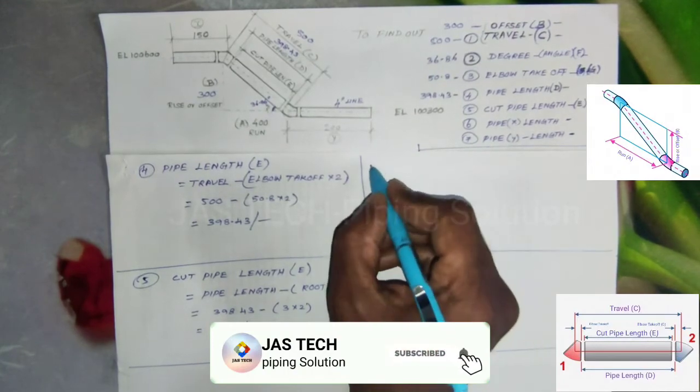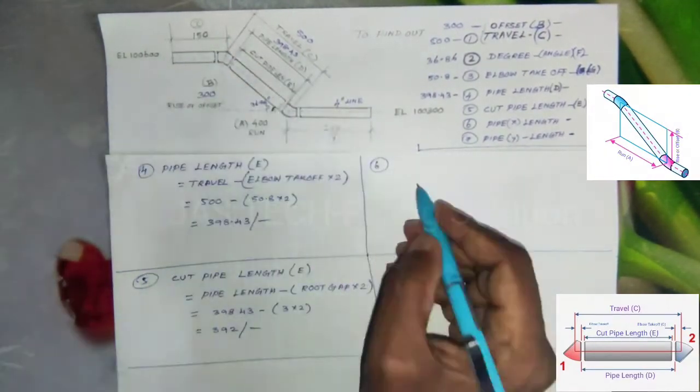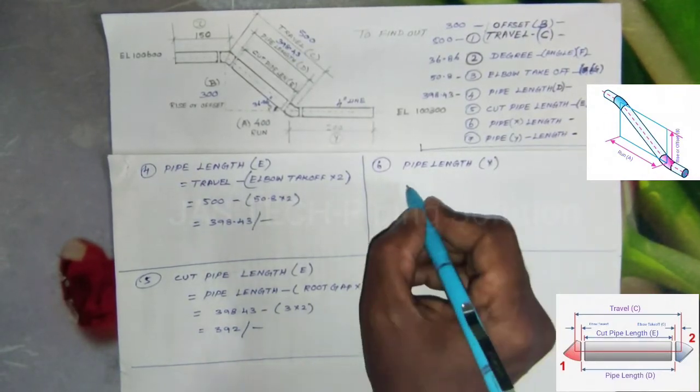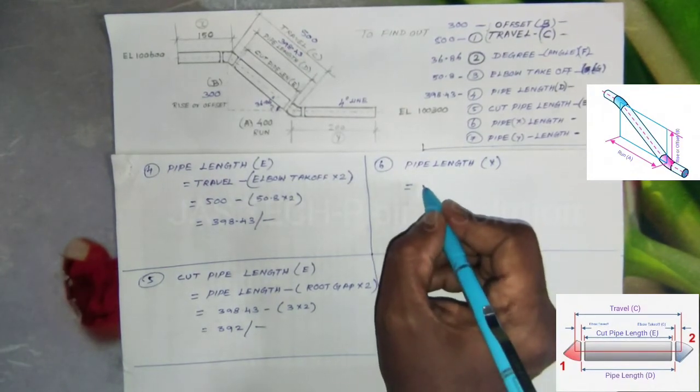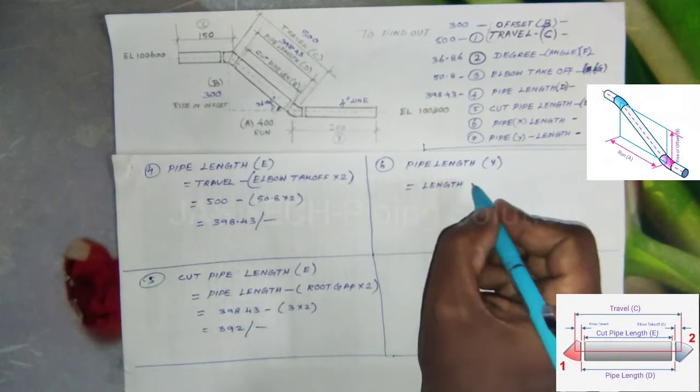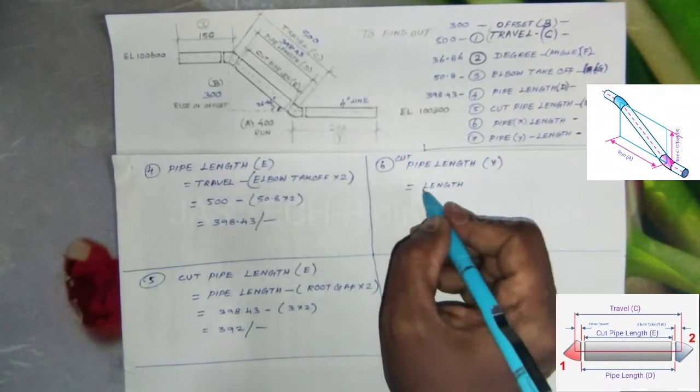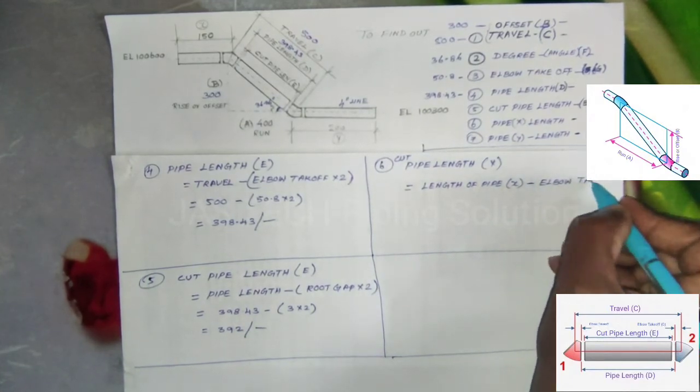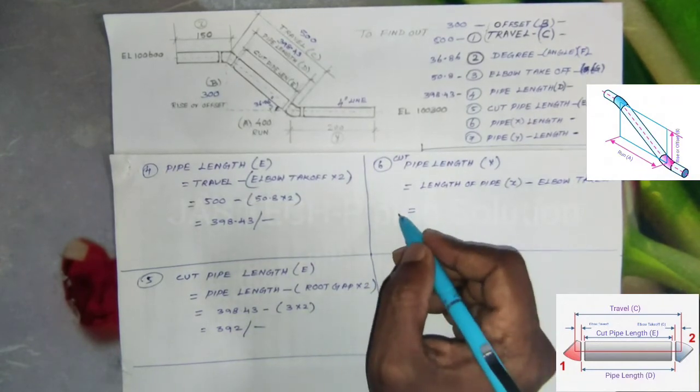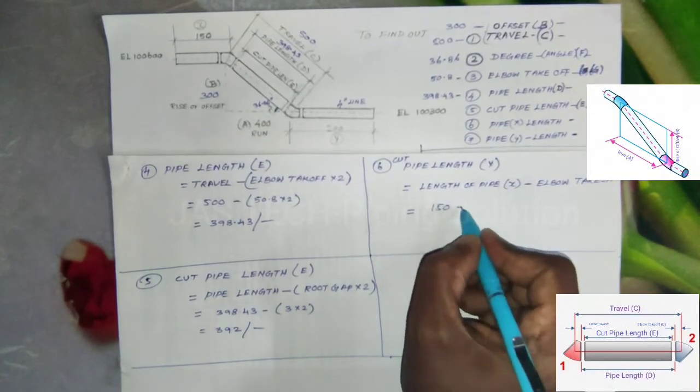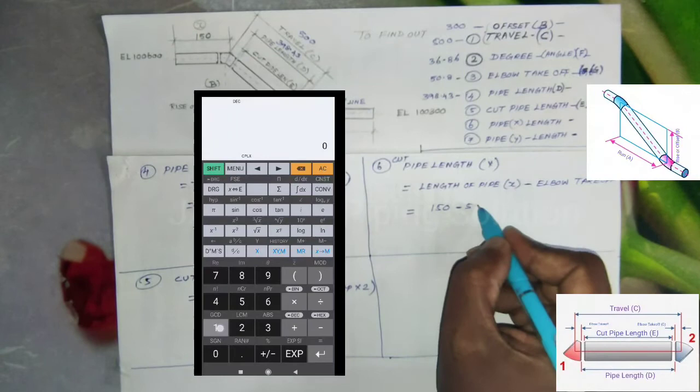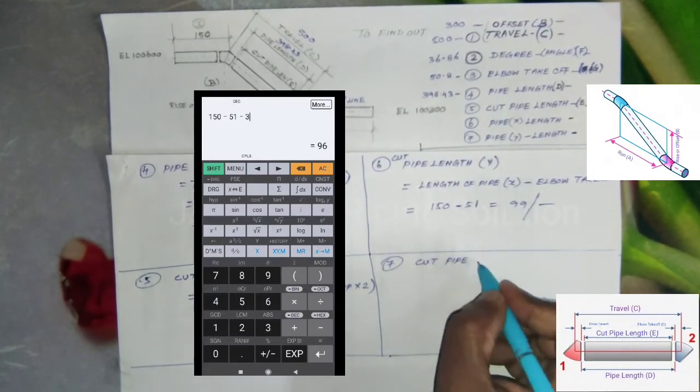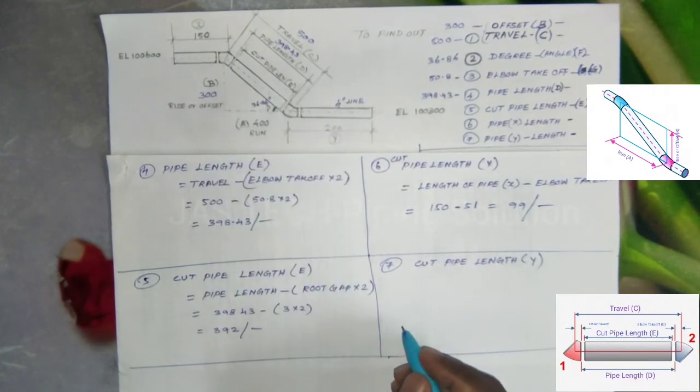Sixth one, to find out cut pipe length of X. From the end of the pipe up to elbow center, as per our drawing, is 150. So cut pipe length equals length of pipe minus root gap thickness minus elbow takeoff. As per our drawing, pipe length X equals 150 minus elbow takeoff 51.99, minus 3 millimeter root gap. It will come to 96 millimeters.